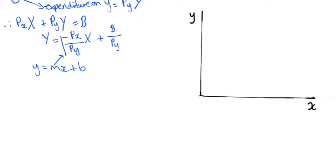m which is a coefficient of X in this case is negative Px over Py. And b in our case is uppercase B divided by Py. But we know that m is the slope. It's the slope of this line. And in our case it is negative Px over Py.